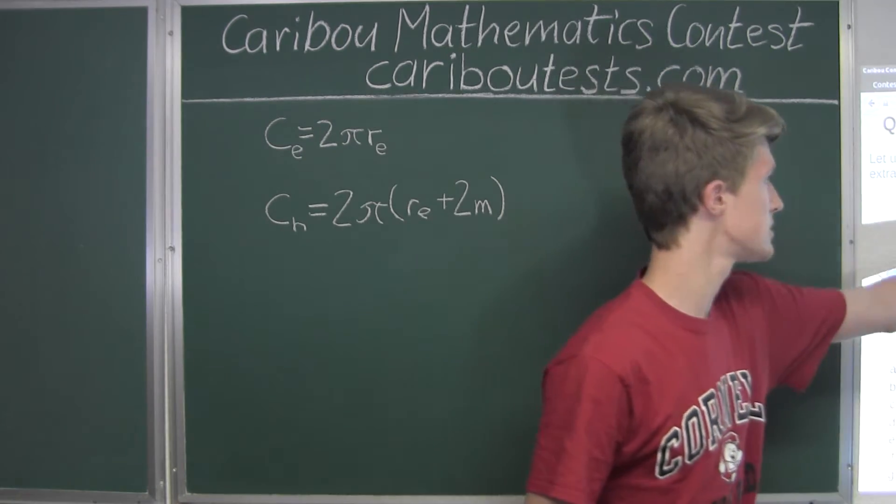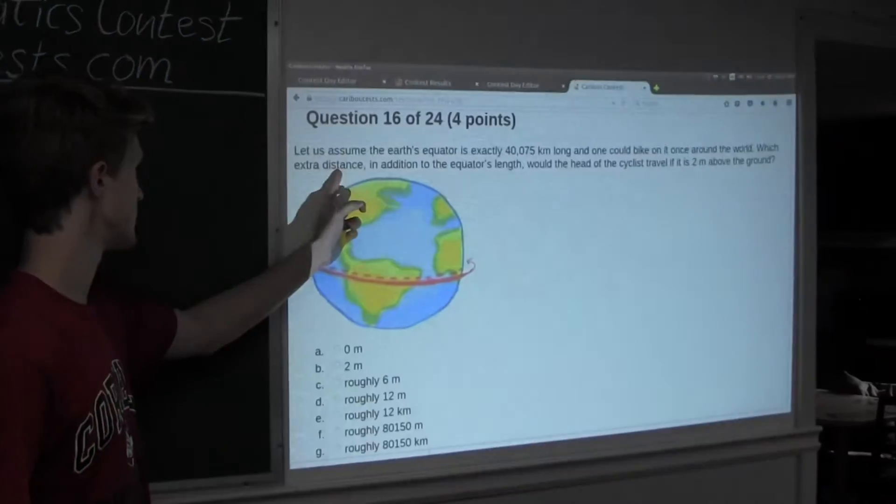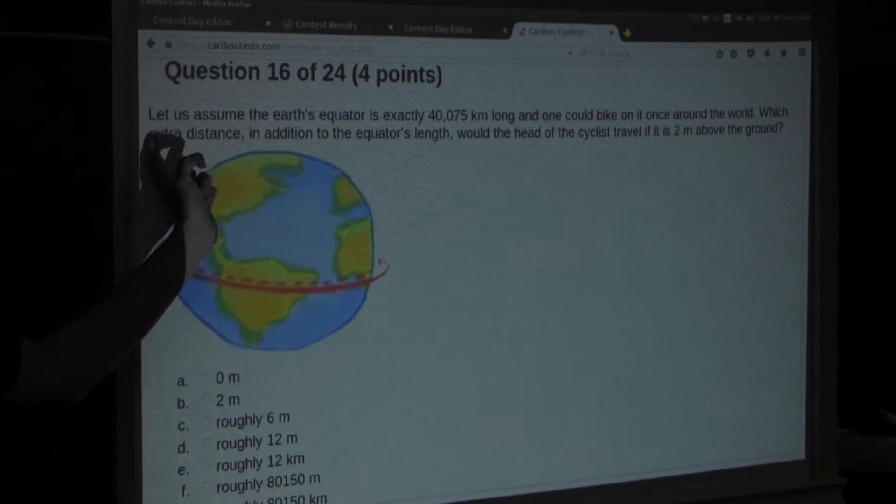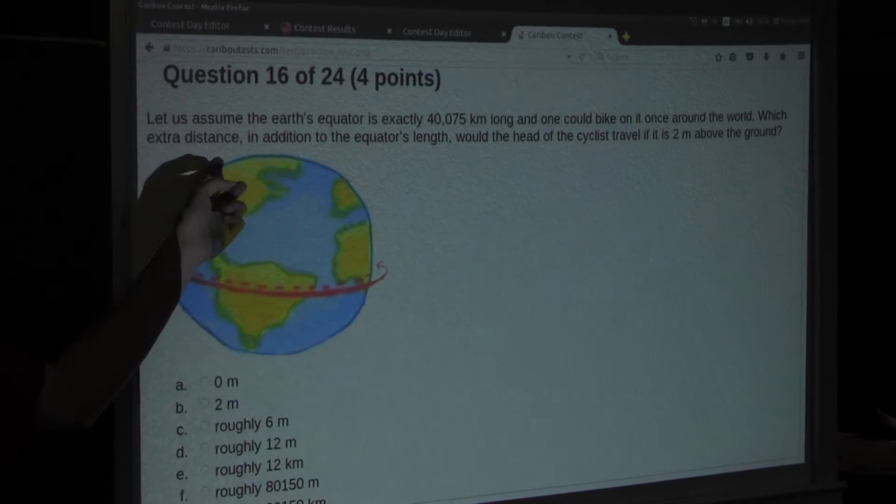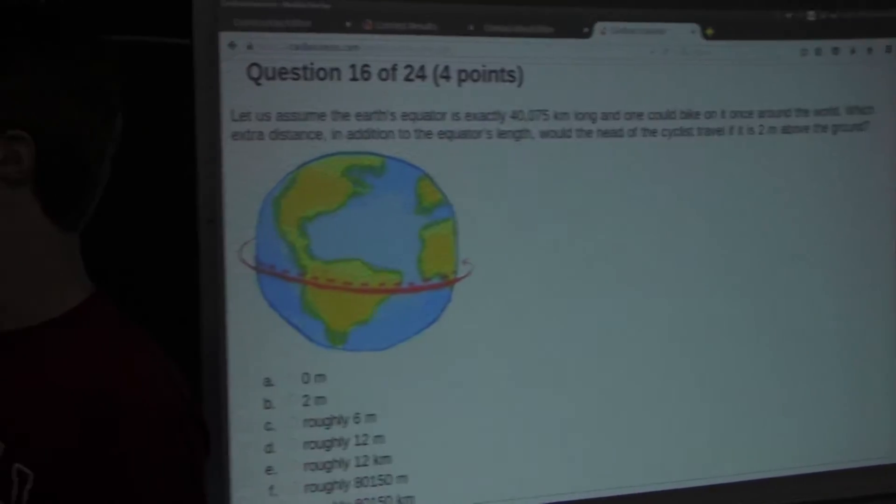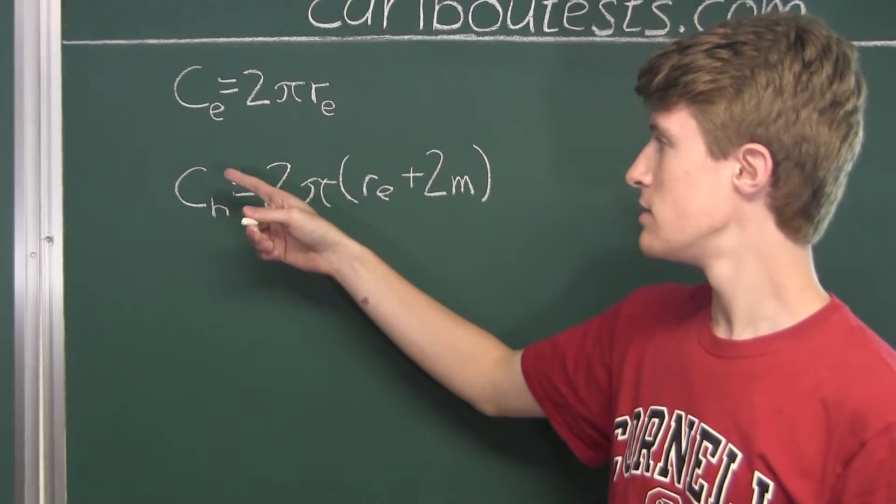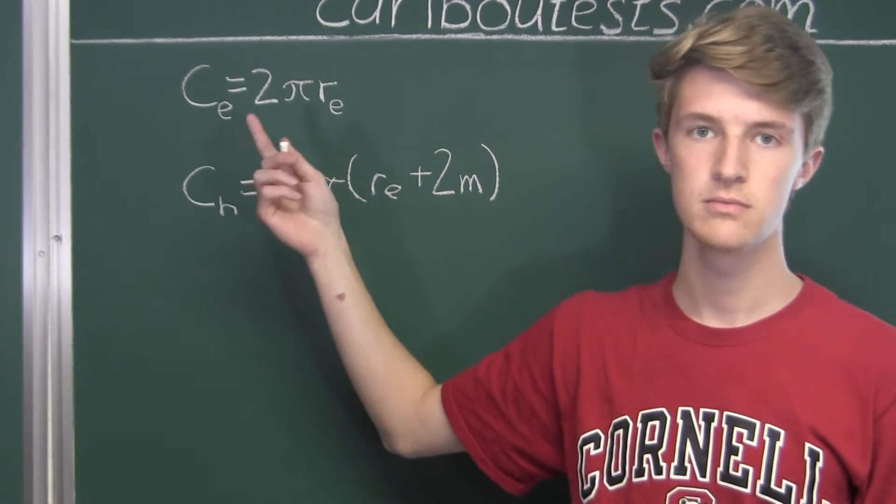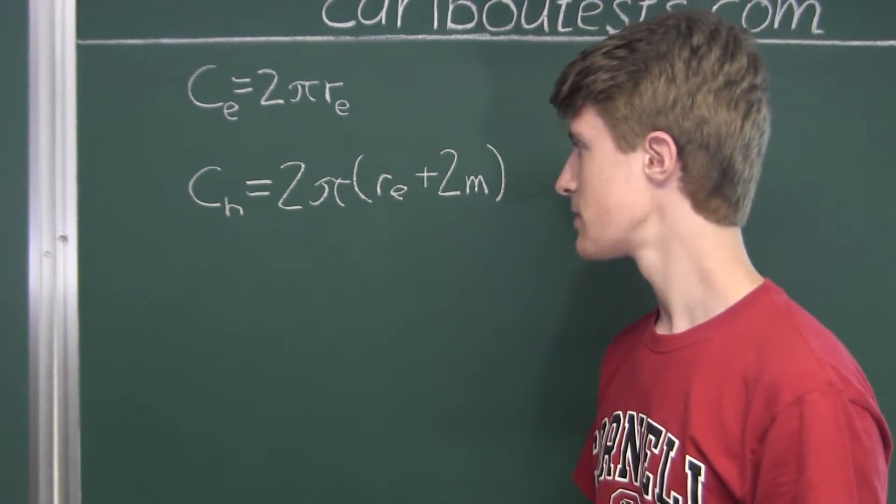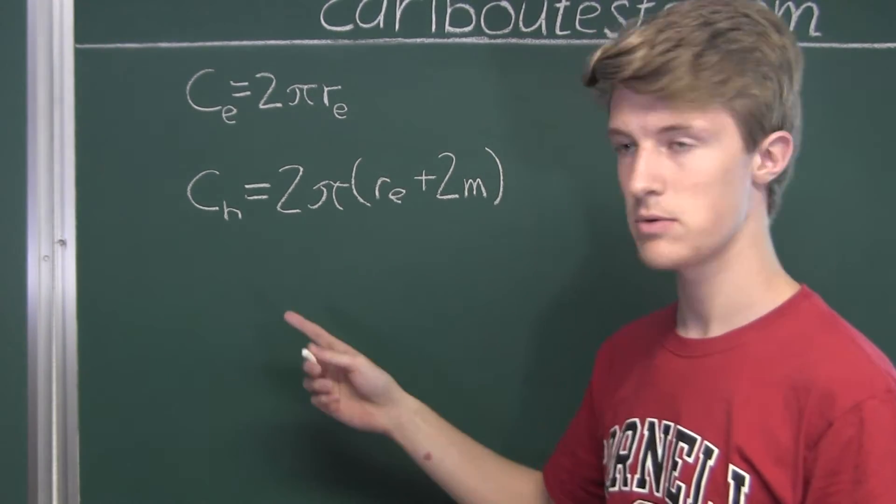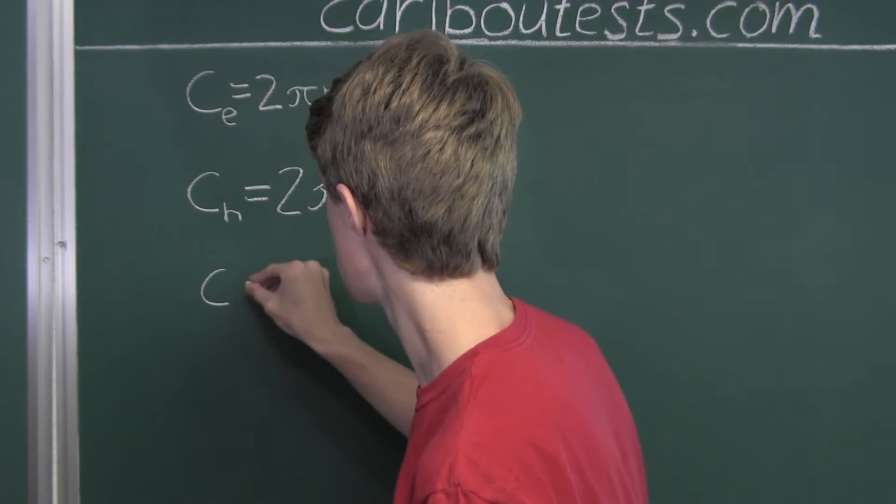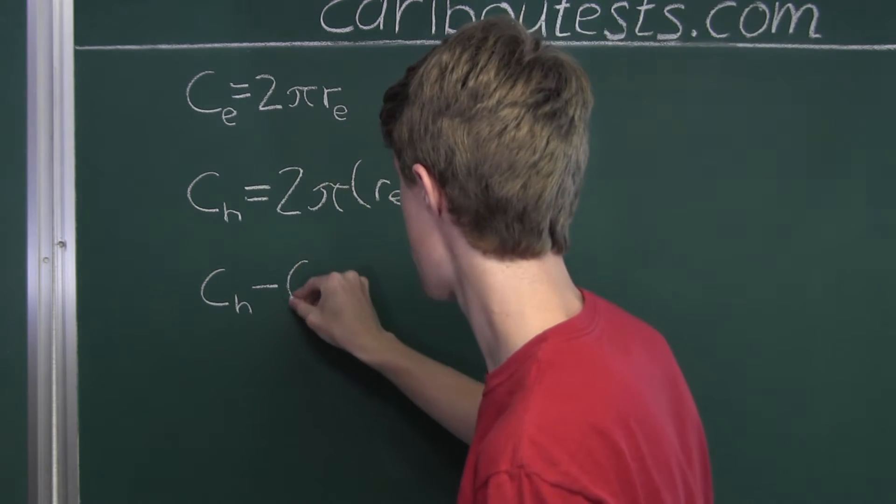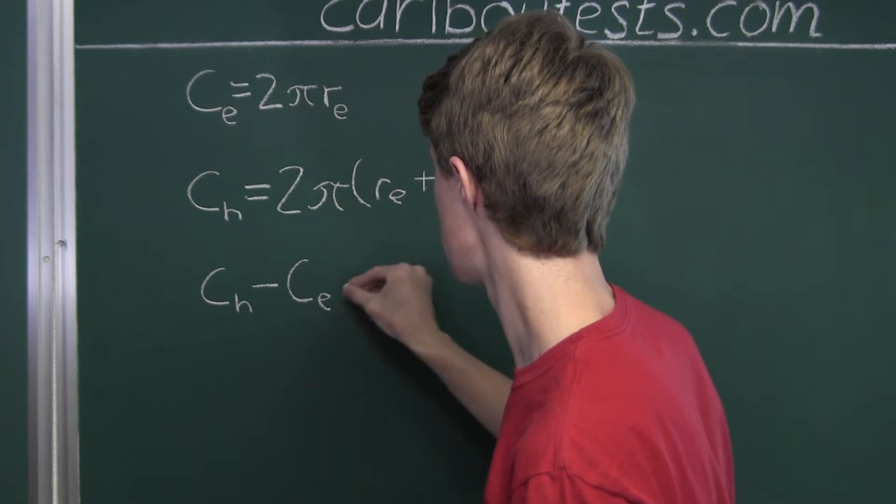Now from the question, the key thing is extra distance, which means we want to find the difference between the circumference of the head's path and the circumference of the equator. To find that, we calculate C sub H minus C sub E.